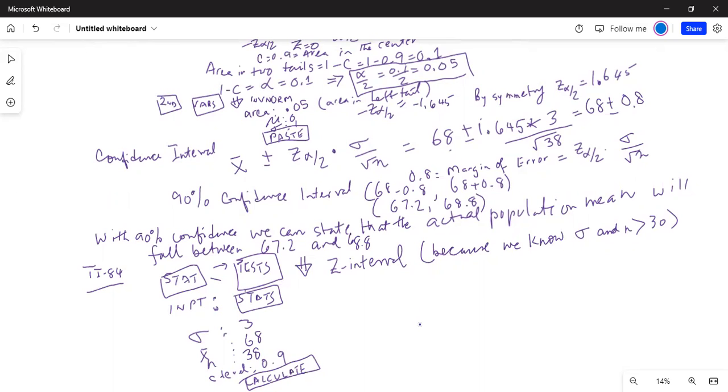And you get a slightly different answer. Let me check on my numbers again. We got 67.9 to 68.1. Let me check. Stat, test, and Z interval. Data sigma is not 0.35. That's why I made a mistake. Sigma is 3. That was a mistake. Calculate, and you should get the same answer. Yes, we got the same answer.